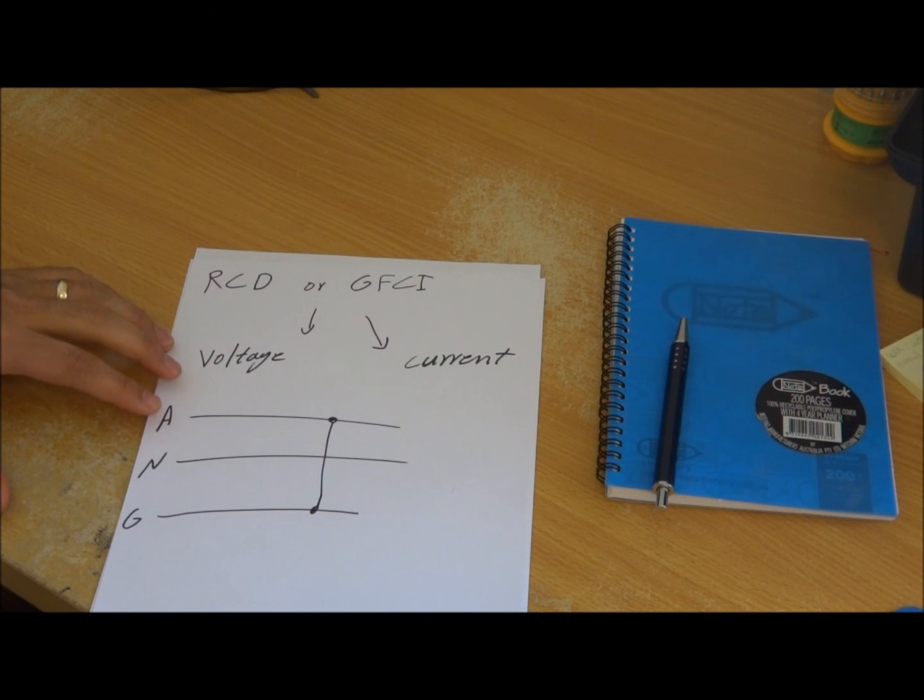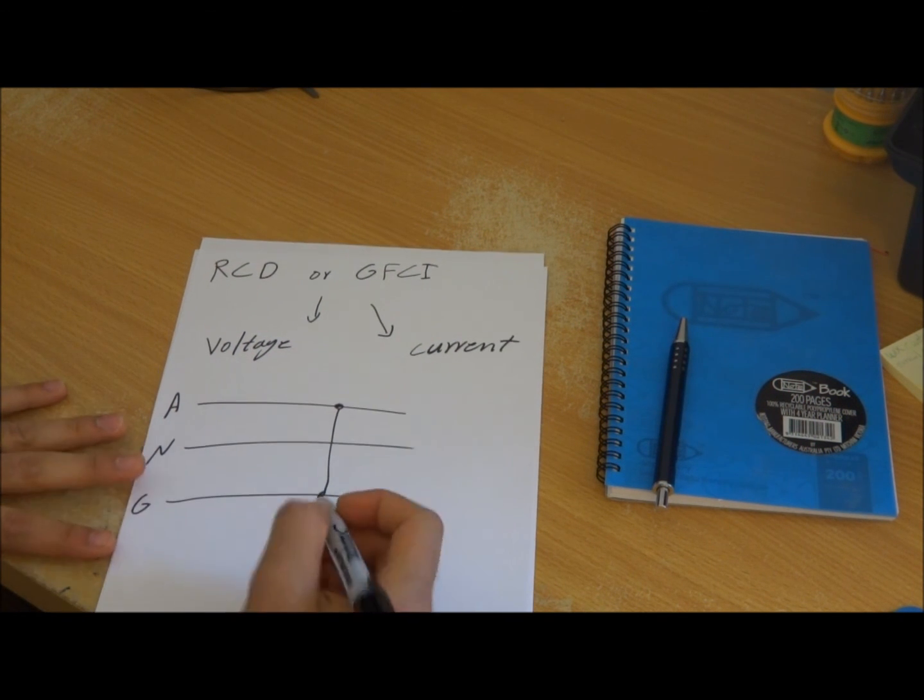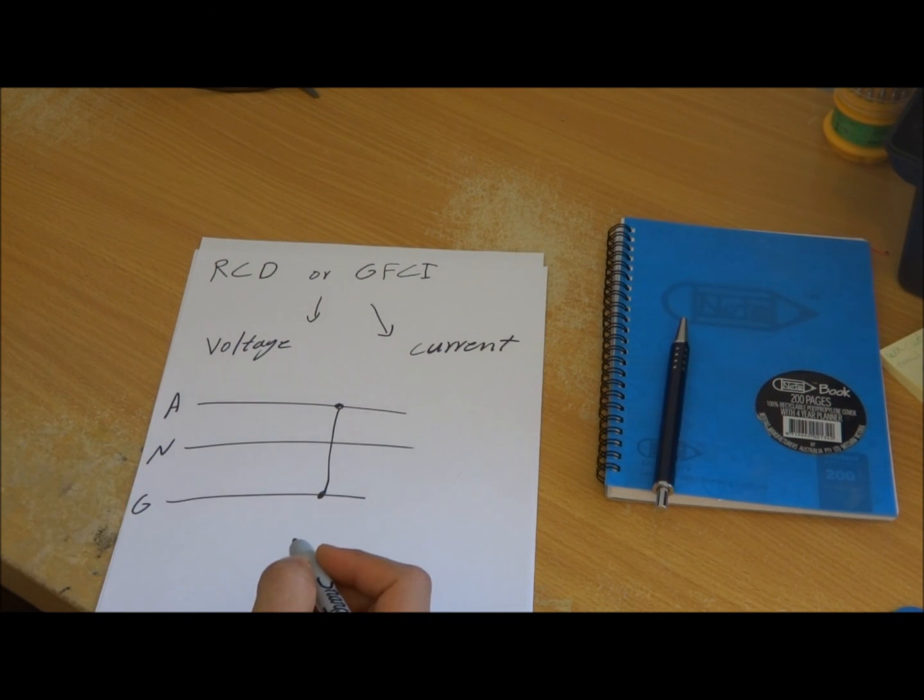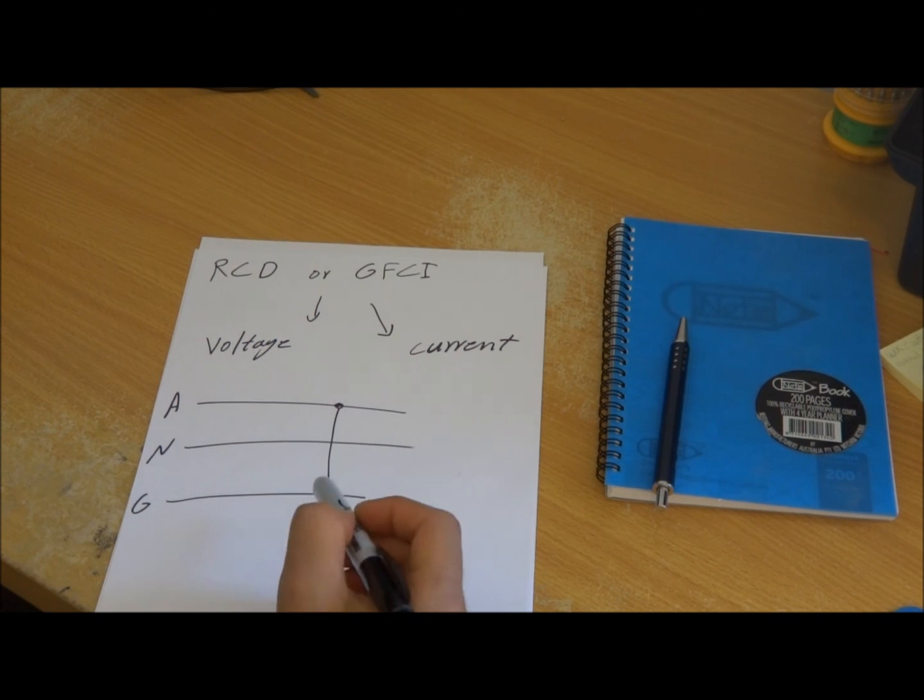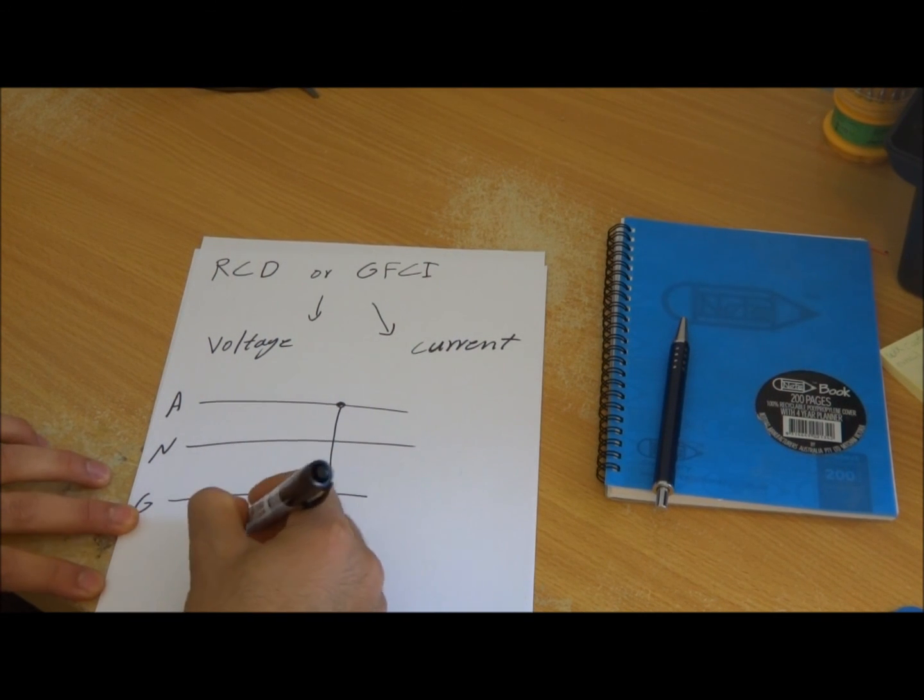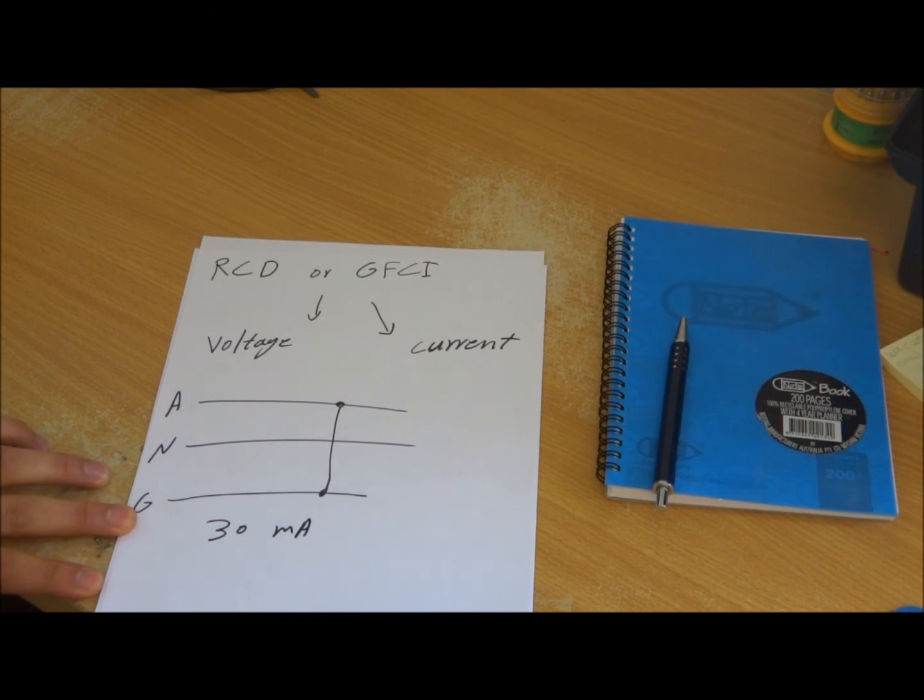And this current, they did some study to find out what sort of current is kind of required to kill a person or would kill a person. It's just above, I think, 30 milliamp or I think 40 to 50 milliamp. But these RCDs work around 30 milliamp. So anything from 10 to 30 milliamp of current leakage would trip it.